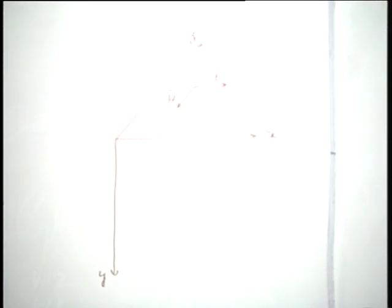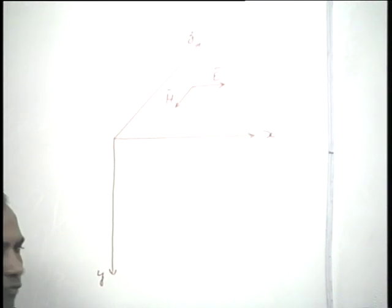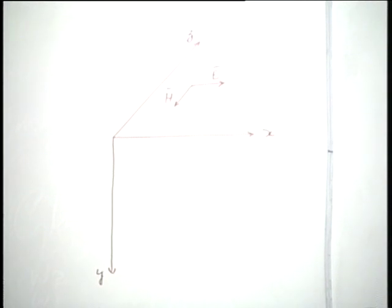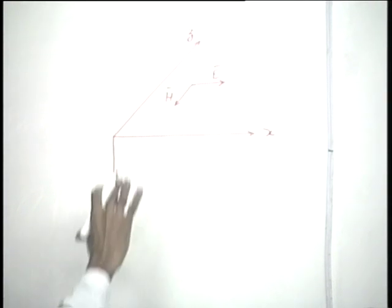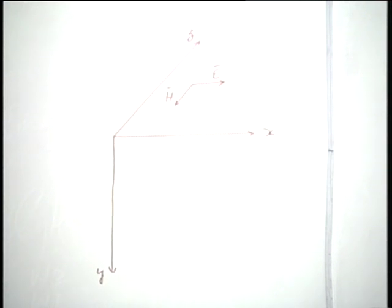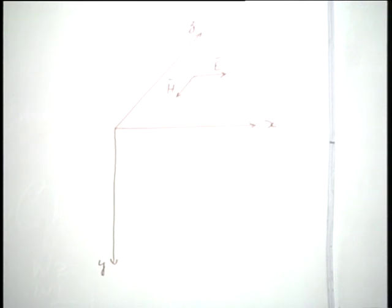A question may be raised: why not e to the power plus gamma y? We say that the medium is of very large extent along the y direction, so there are no discontinuities and a wave propagating in the negative y direction is not generated. Considering that the medium is of sufficient thickness, we restrict our attention to a wave propagating in the positive y direction.